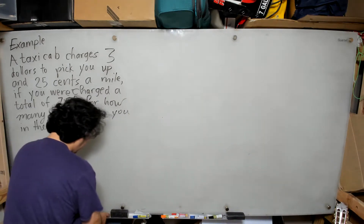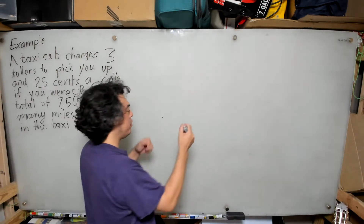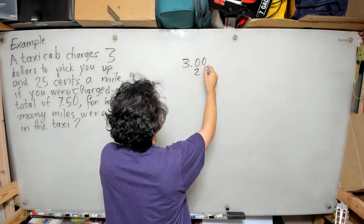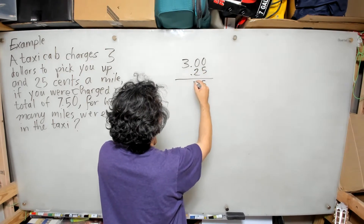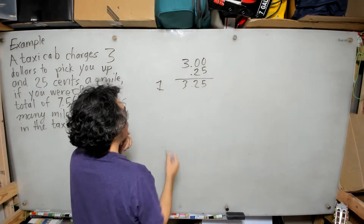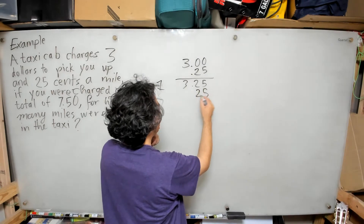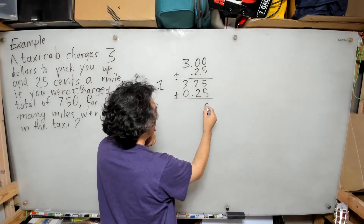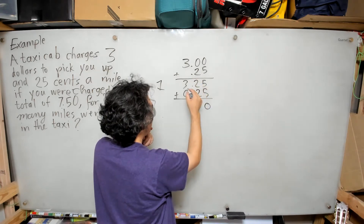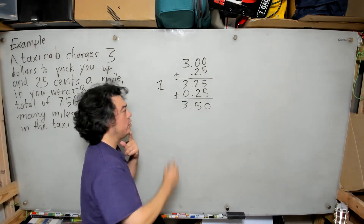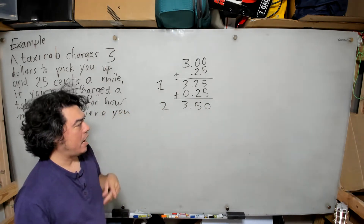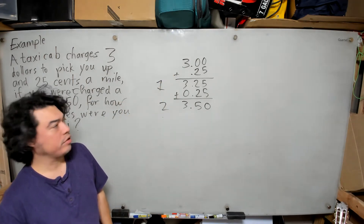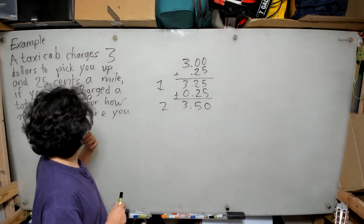If I didn't know algebra, I could say: three dollars when they pick me up, and then I add 25 cents — so after one mile I'm at $3.25. I add 25 cents again and after two miles I'm at $3.50. I can keep going like this, but you can see I'll be here all day calculating until I get to $7.50. There has to be a better way — and that's the advantage of algebra.